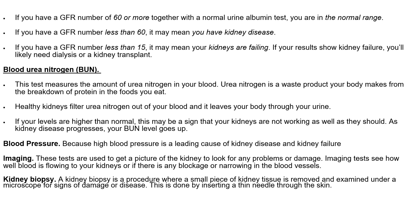A GFR number of 60 with a normal urine albumin test is considered normal. A GFR number less than 60 means you have kidney disease. A GFR number less than 15 means your kidneys are failing. If your results show kidney failure, you will likely need dialysis or a kidney transplant.